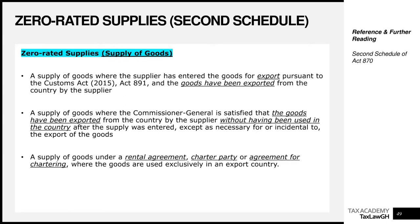The first thing on the second schedule is a supply of goods where the supplier has entered the goods for export pursuant to the Customs Act of Ghana, Act 891, and those goods have indeed been exported from Ghana by the supplier. A key general rule: exports are zero-rated. Either you're exporting goods or a service — all exports would ordinarily be zero-rated. You need to make the relevant export declarations at the port and prove that the goods have left Ghana with documentary evidence.